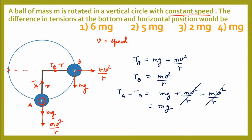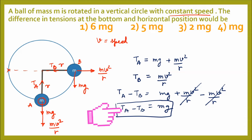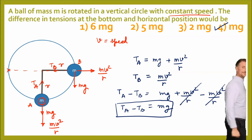So the net difference in tensions is T_A − T_B = mg. That is the solution, and the correct option is option 4. Now let's go to the next question.